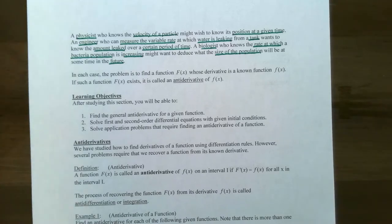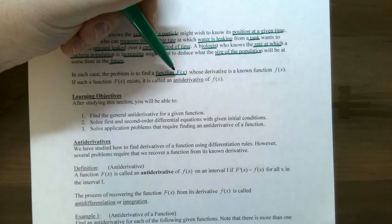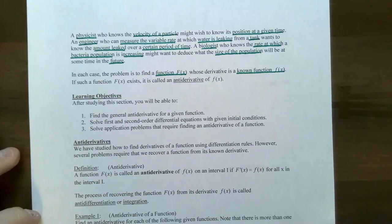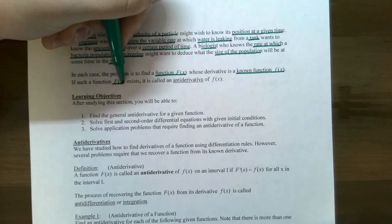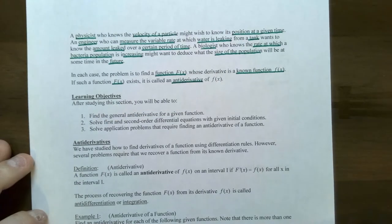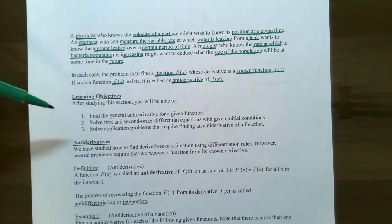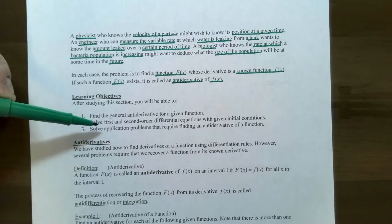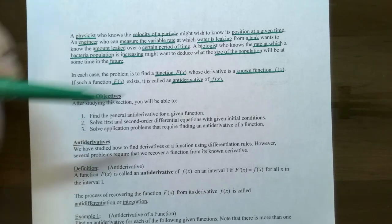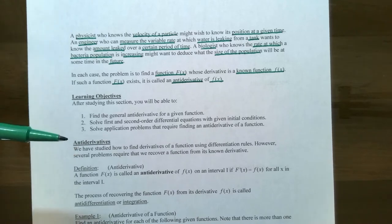In each case, the problem is to find a function F(x) whose derivative equals the known function f(x). If this function F(x) exists, it is called an antiderivative of f(x). We're going to find the general antiderivative for a given function. In the next video we'll cover differential equations — finding antiderivatives with first and second order differential equations, solving them with initial conditions, and solving application problems.